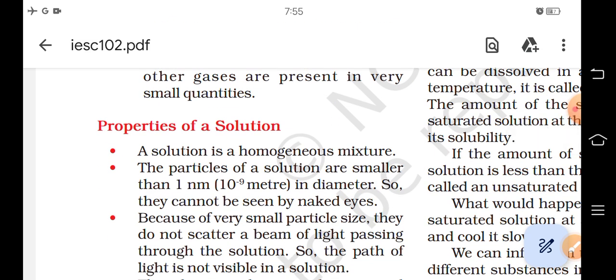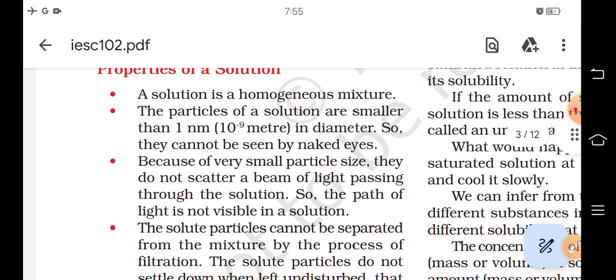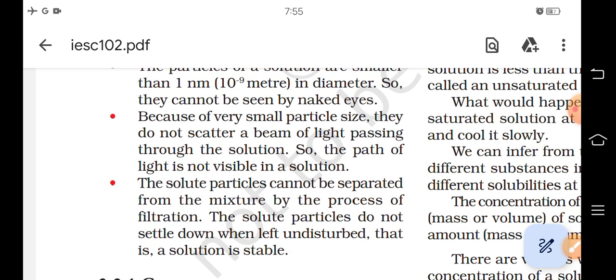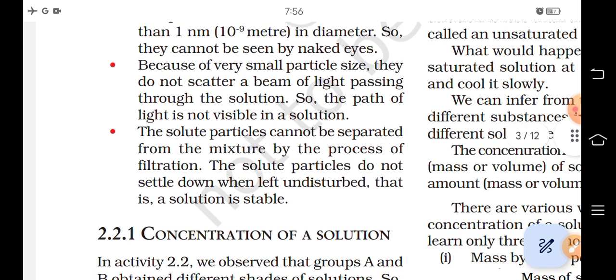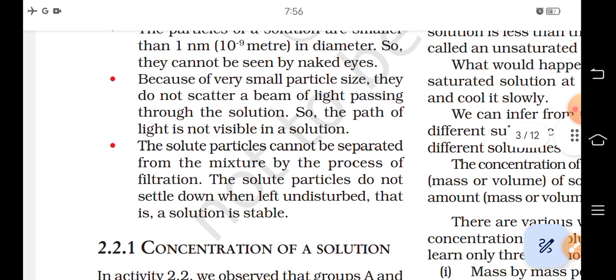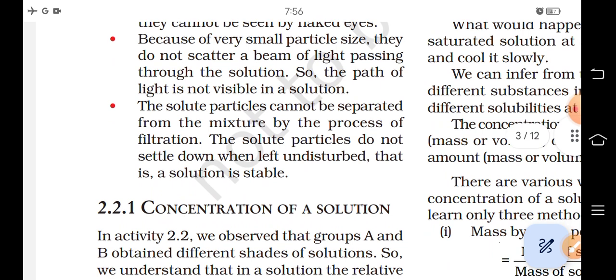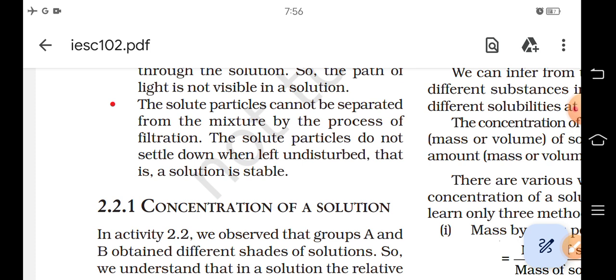Properties of a Solution: A solution is a homogeneous mixture. The particles of a solution are smaller than 1 nanometer, meaning 10 to the power minus 9 meter in diameter. So they cannot be seen by naked eyes. Because of very small particle size, they do not scatter a beam of light passing through the solution. So the path of light is not visible in a solution. The solute particles cannot be separated from the mixture by filtration. The solute particles do not settle down when left undisturbed, that is, a solution is stable.